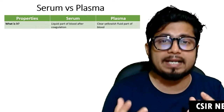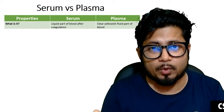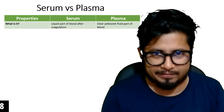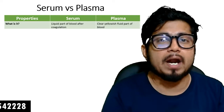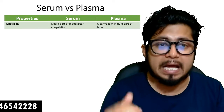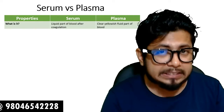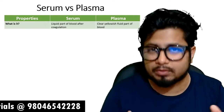Plasma, on the other hand, is the clear yellowish fluid part of the blood. It holds the blood cells, proteins, and everything else. This liquid fluid part of blood that includes the coagulation factors is plasma, whereas serum is without the coagulation factors.